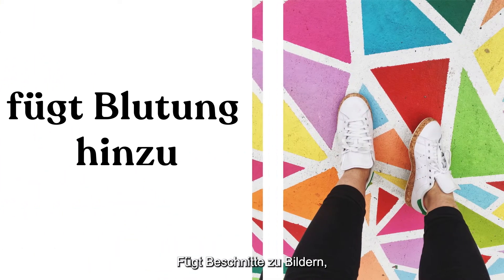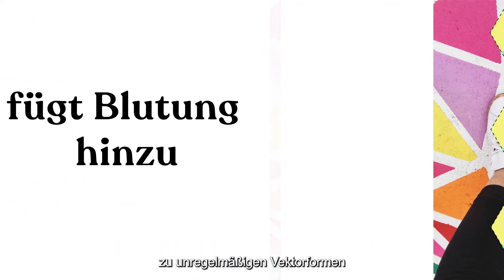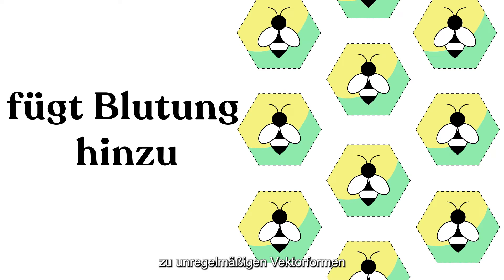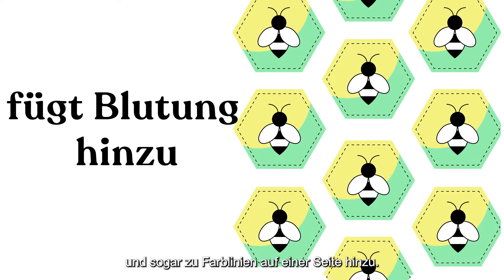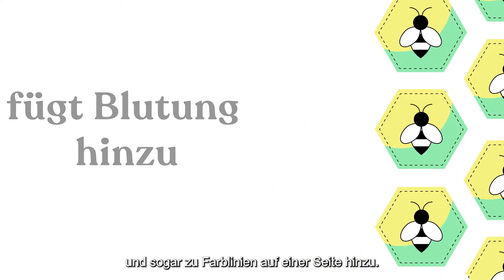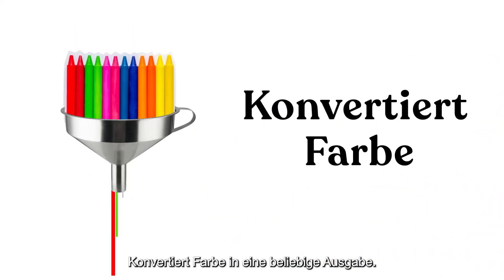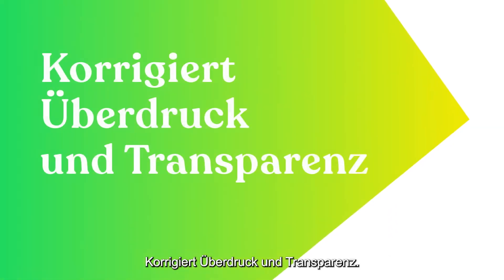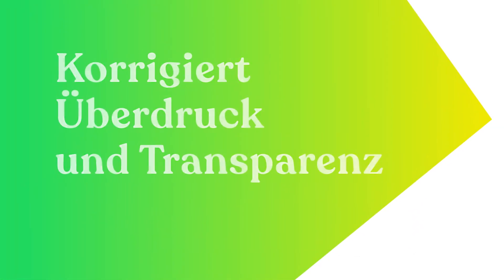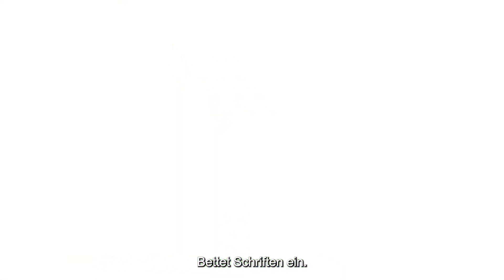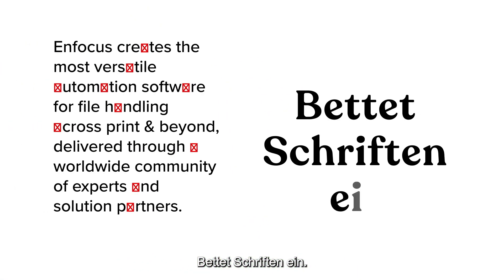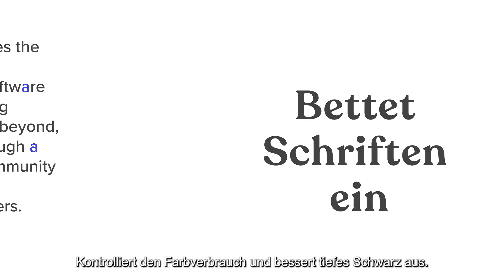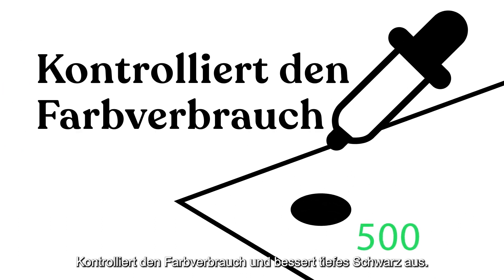It adds bleeds to images, to irregular vector shapes, or even die lines within a page. It converts color to any output, corrects overprint and transparency, embeds fonts, checks ink coverage, and repairs rich black.